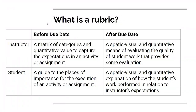So the first thing — and this may be one of those basic questions — is what is a rubric? A rubric is different things at different times. Before the actual due date, for the instructor, it's really a matrix of categories and quantitative values to capture the expectations of an activity or assignment. It's this grid — almost an if-this-then-that logic — trying to give the student a sense of a pathway. For the student, it is a guide to the places of importance for the execution of an assignment or activity.